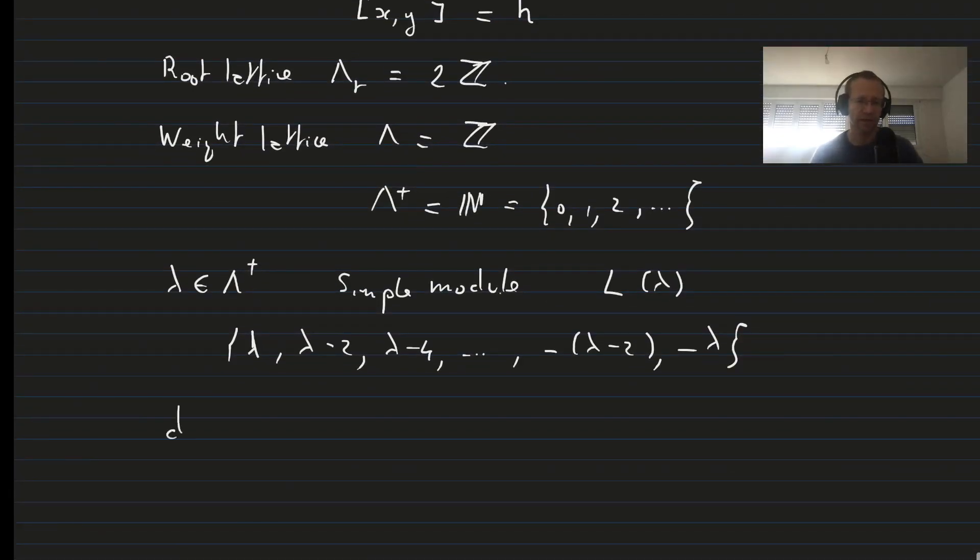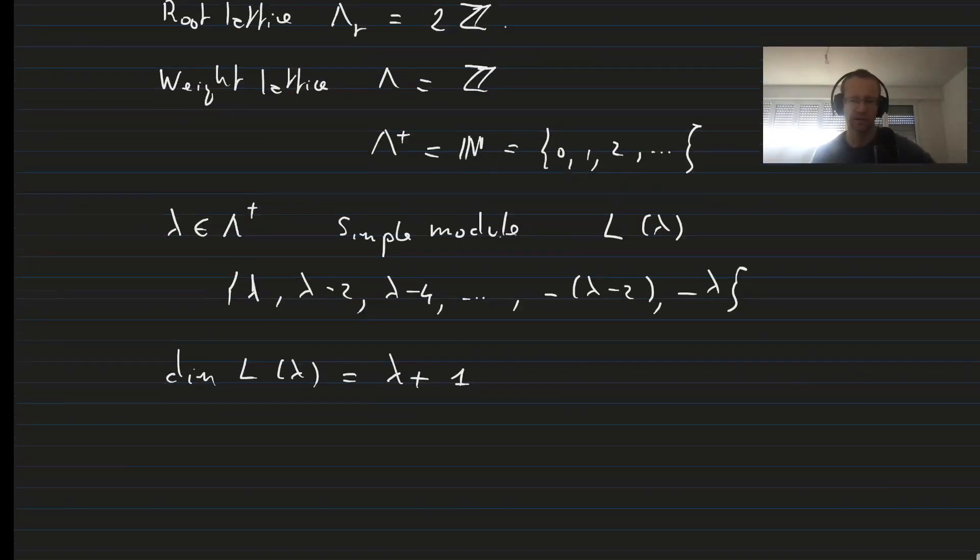Therefore, the dimension of this simple module is lambda plus 1. And for physicists, we keep in mind that lambda is equal to 2 times the spin usually denoted by J.